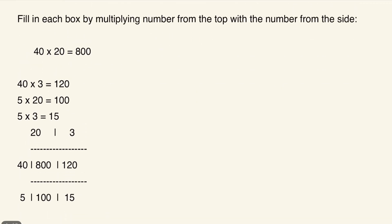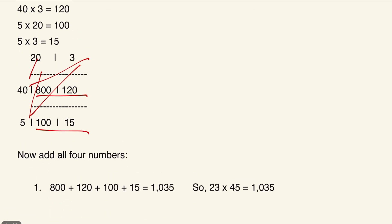You can see the four products: 40 times 20, 40 times 3, 5 times 20, and 5 times 3. Now add all four numbers together: 800 plus 120 plus 100 plus 15 gives you 1,035. So 23 times 45 equals 1,035. You can check this answer with a calculator and you'll get the same result.